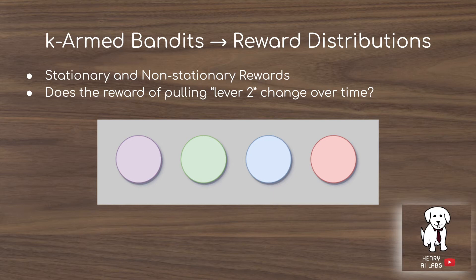An interesting characteristic of the K-Armed Bandits problem is the distribution of rewards and how it changes over time. The reward distribution can be stationary — meaning pushing the purple button has the same expected reward across all time steps — or non-stationary, meaning the distribution changes over time. A good example of non-stationary rewards is playing against an opponent in an adversarial game like chess: if you keep making the same moves, the opponent may adapt, changing the reward distribution of those moves.